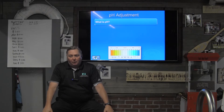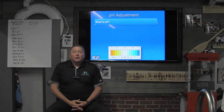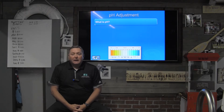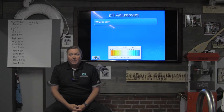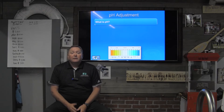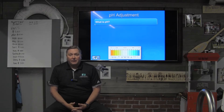It means 'please help' — not exactly. What pH really is, in layman's terms, is the acid versus base demand of the water. Our pH scale is 0 to 14: 0 to 7 is acidic, and 7 to 14 is basic.